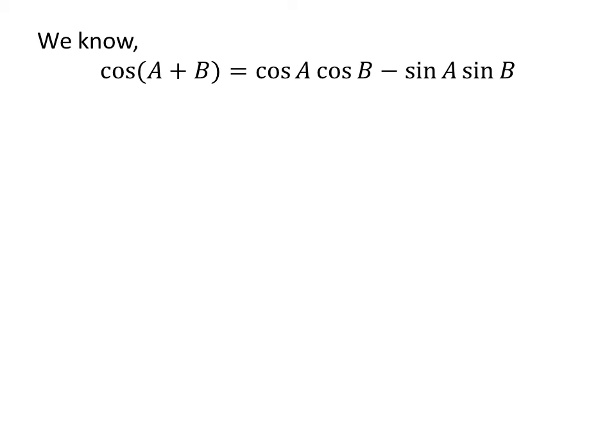As we know, the trigonometry identity cosine of A plus B is equal to cosine of A times cosine of B minus sine of A times sine of B.